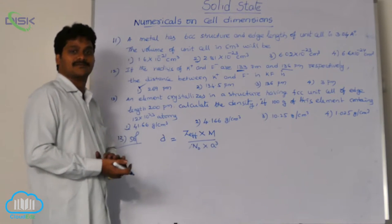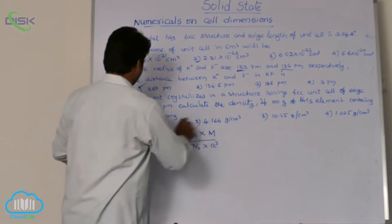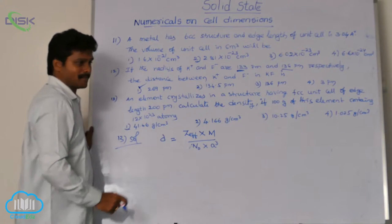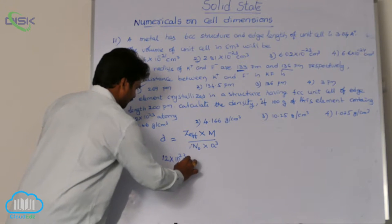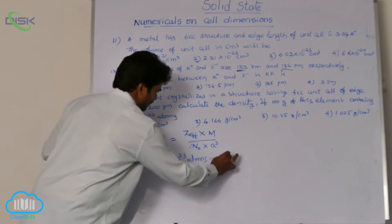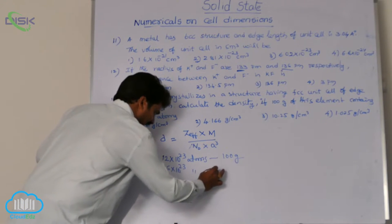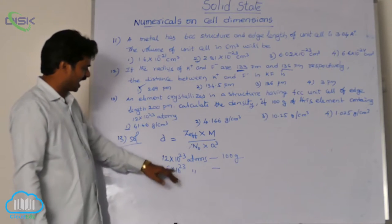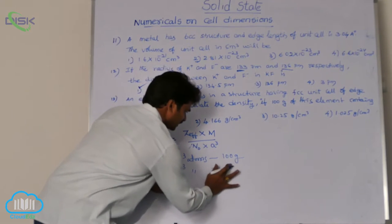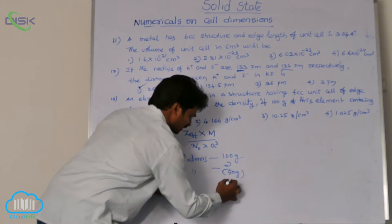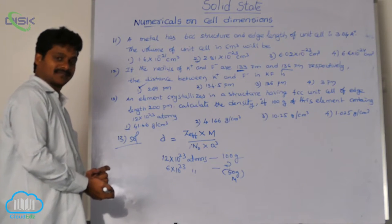How to calculate the atomic weight of the given element? So for that see there is a hint given. So here this number of atoms having mass 100 grams. So how many atoms? If 12 into 10 power 23 atoms have the mass of 100 grams, then 6 into 10 power 23 atoms have how much mass? See this number is half of the given. So here also the answer is 50 grams. You know this 50 grams is nothing but molar mass. So what is the atomic weight of the element? 50.